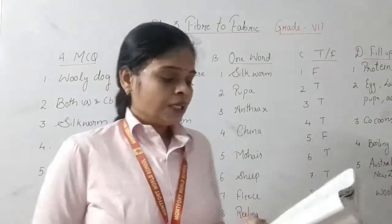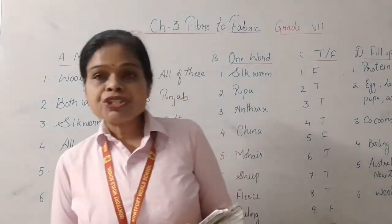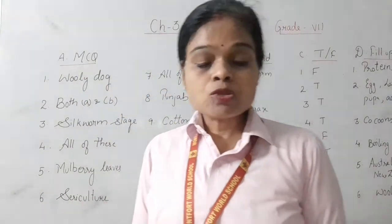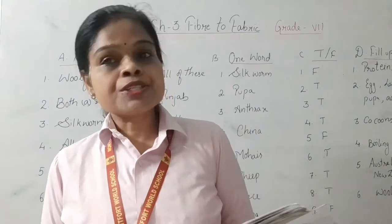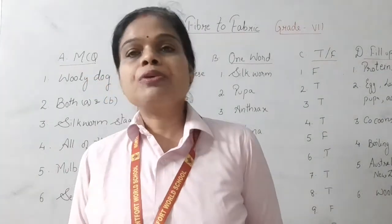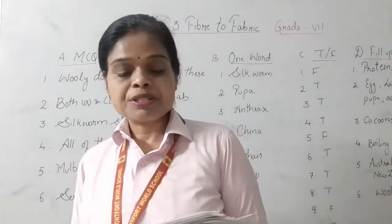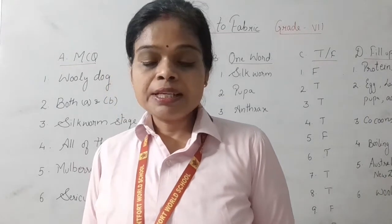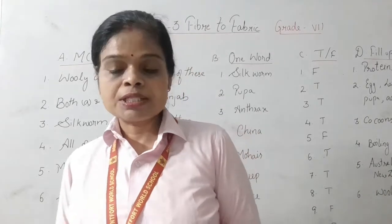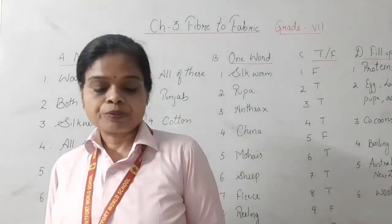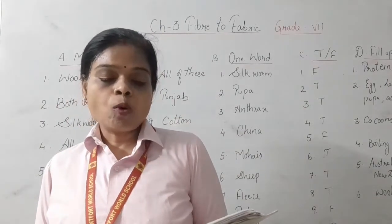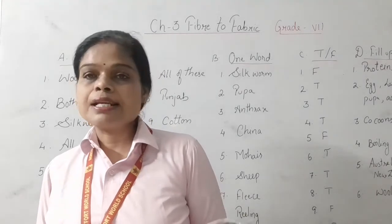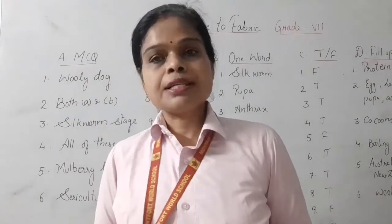True and False: Wool is obtained only from the sheep — False, it can also be obtained from goat and rabbit. Wool traps more air in it as compared to cotton — True. Silk and wool both are obtained from animals — True.